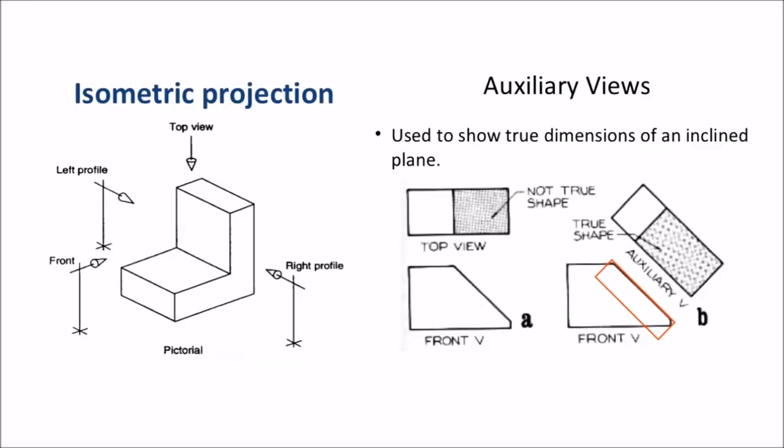Another type of projection is isometric projection. This projection is generally taken from an angle over elevation. More proficiently, it is 45 degree or 30 degree angle. This type of projection is generally a 3D projection which represents all three sides of the object in a single plane.